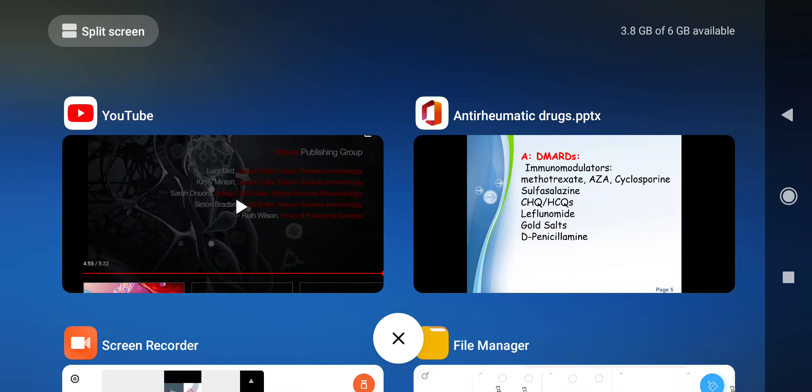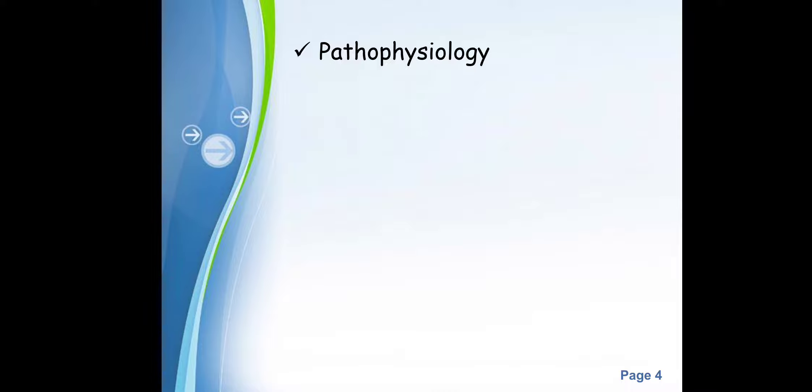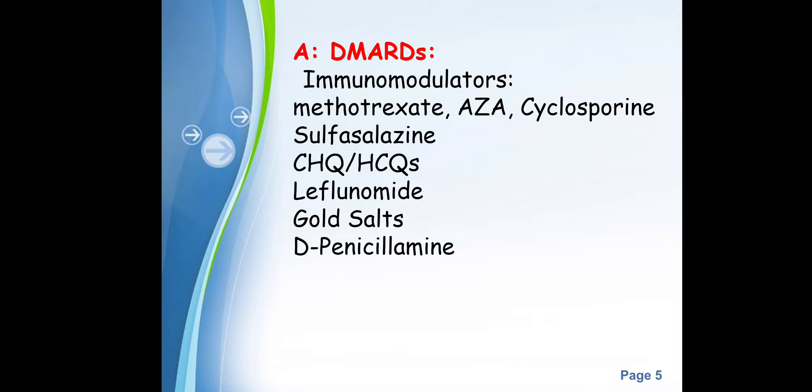That was a wonderful video by Nature Group. After understanding this pathophysiology, we can clearly understand that there are certain inflammatory markers responsible for causing damage to the bone. Our treatment target will be those inflammatory markers. Now let's look at the classification of drugs used to treat rheumatoid arthritis.